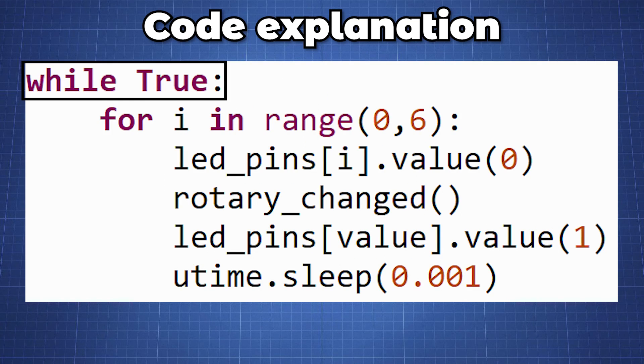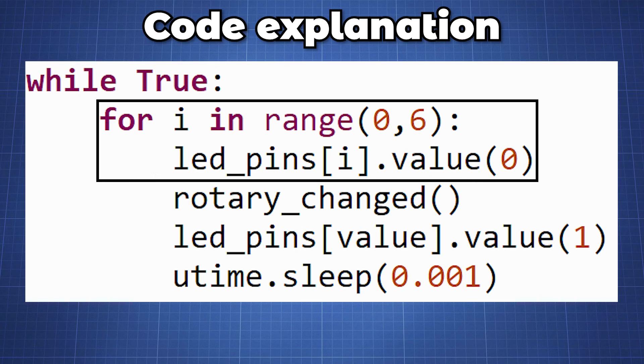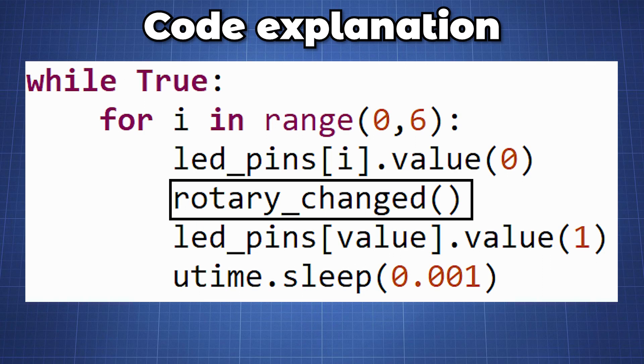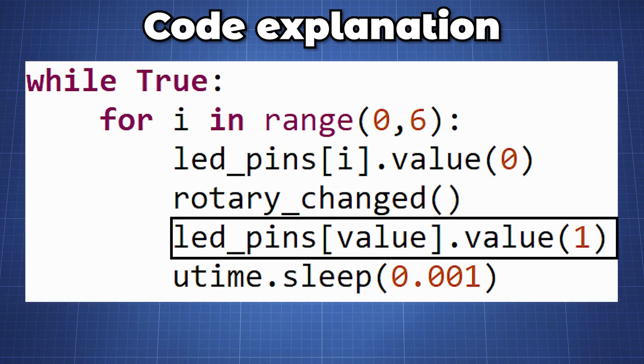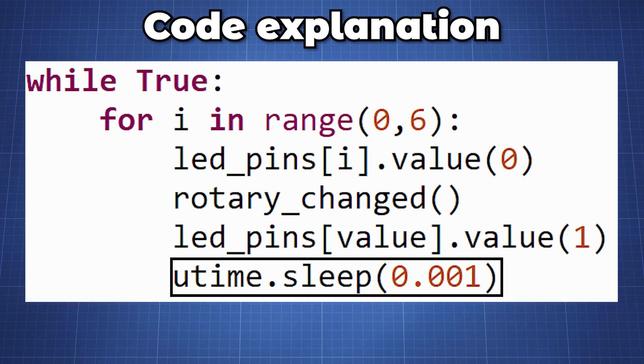Now we create an endless loop by saying while True. Then we create a loop to go through the six LEDs setting them to zero checking if there is any change in the rotary. If there is we will set the LED high corresponding to the value and have a short delay.